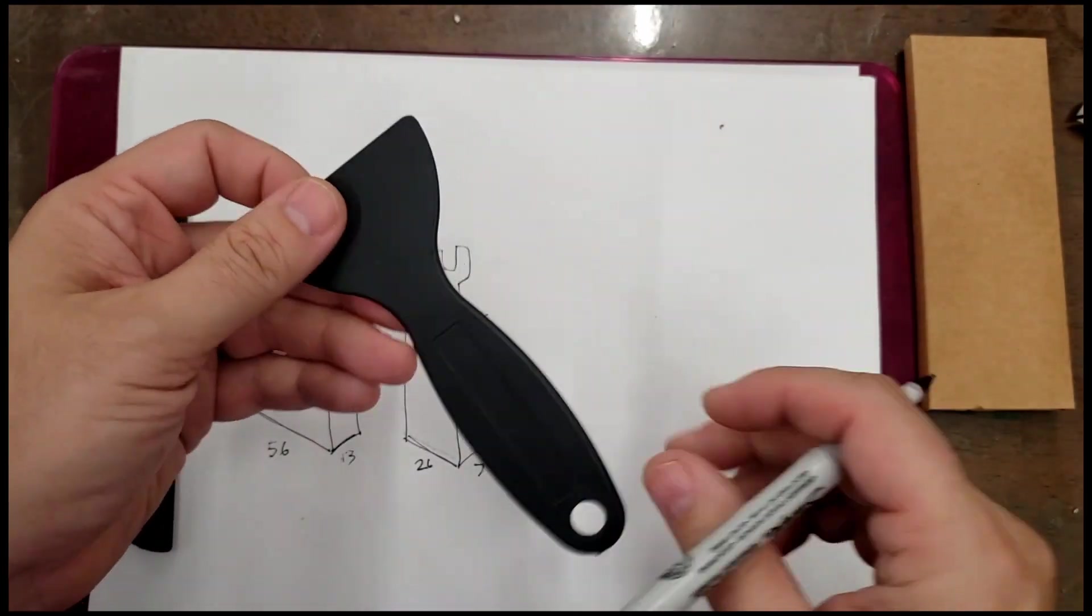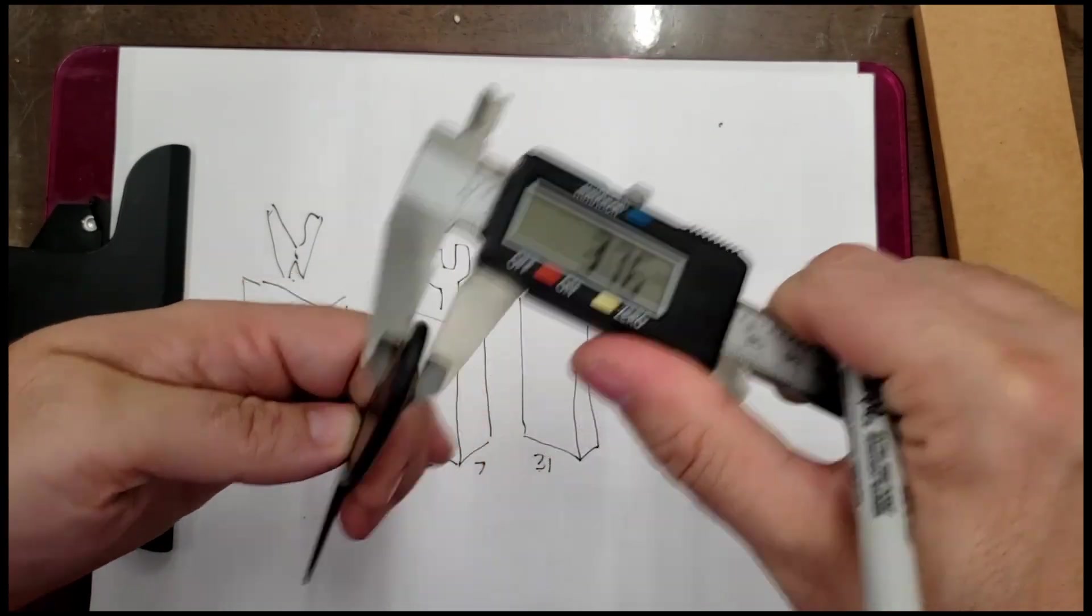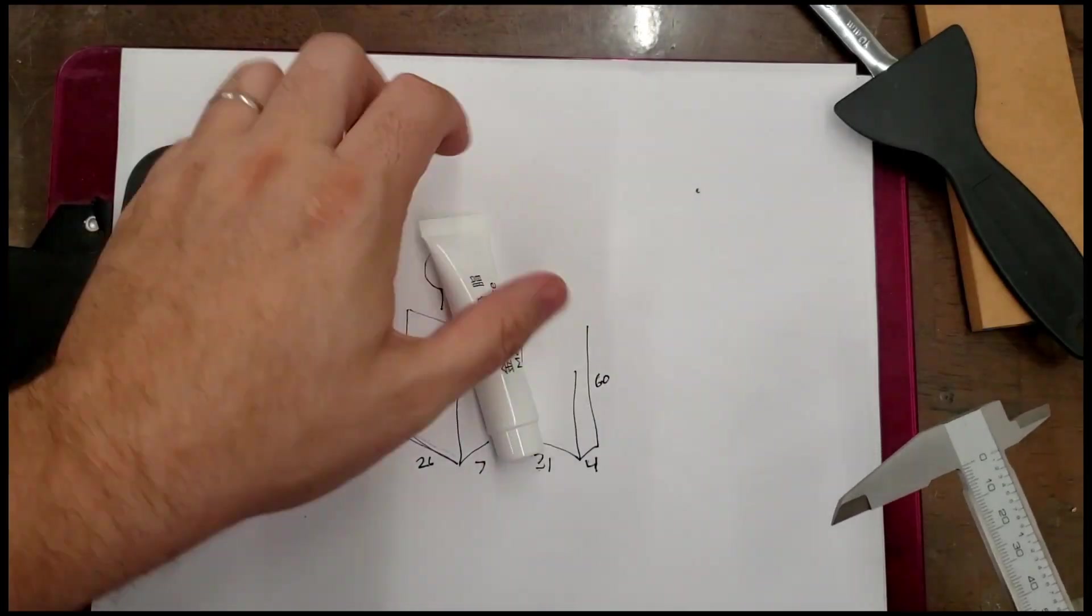Next is this scraper thingy. So we need to be about 30. And then width wise. Yeah, we got what? Three, four millimeters there.